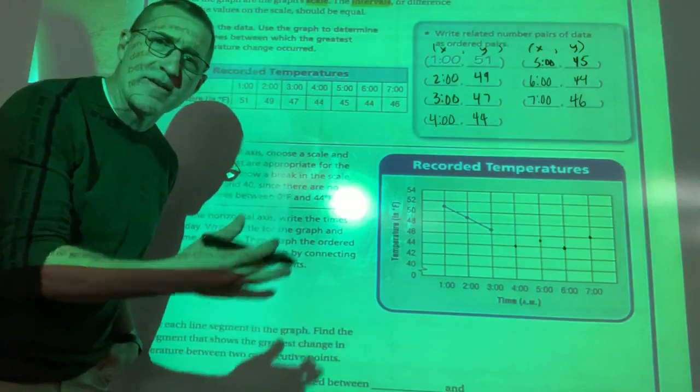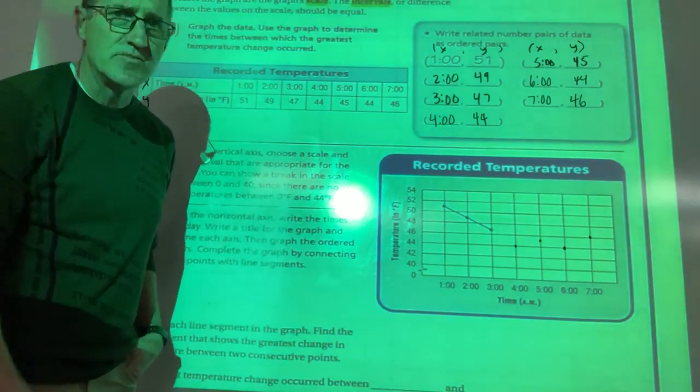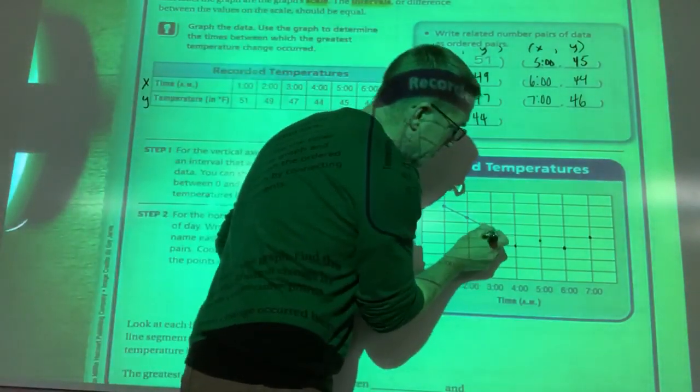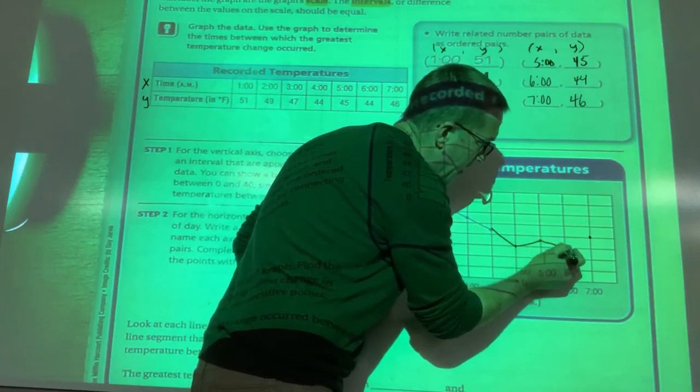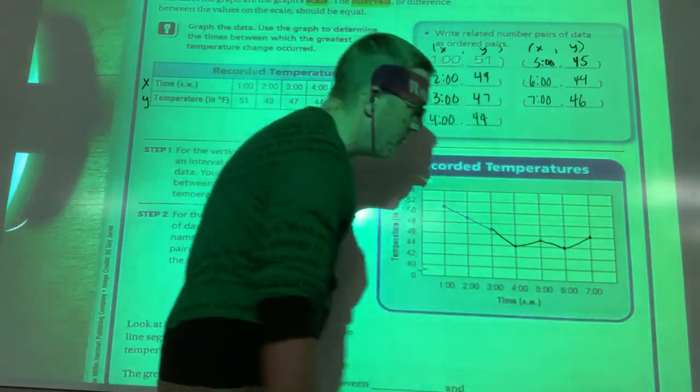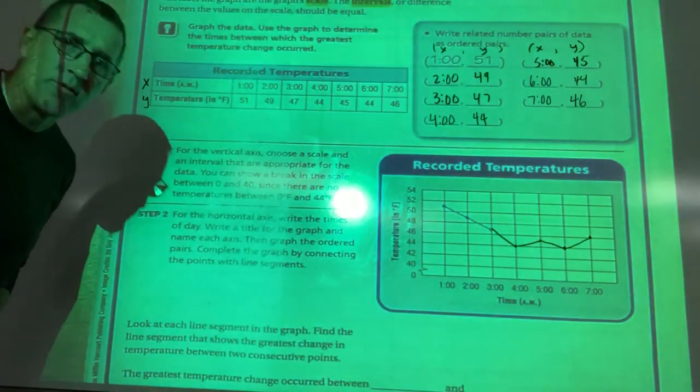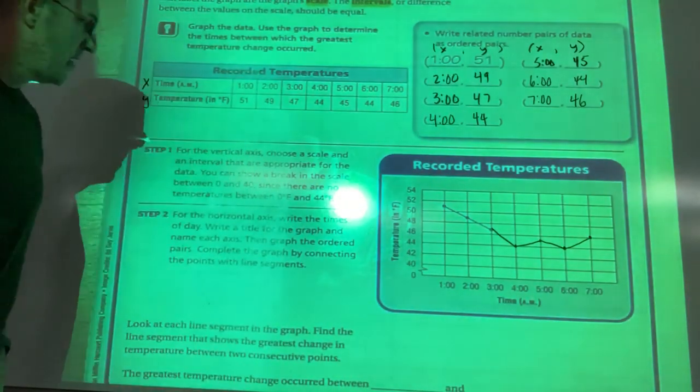And then to make a line graph, all I've got to do is connect the dots. So try to get your lines nice and straight if you can, as best you can. Boom. And you have created a line graph. It looks like one of those stock market things, right?